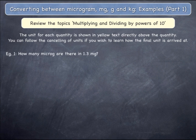Example 1, how many micrograms are there in 1.3 milligrams? Since you are changing from milligrams to micrograms, you must multiply the starting quantity by 1,000.